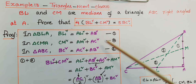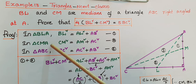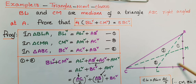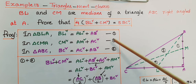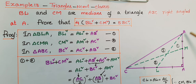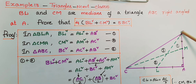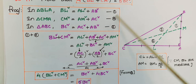In triangle BLA, since the angle is 90 degrees, BL² = AL² + AB² (first equation). In triangle CMA, since the angle is 90 degrees, CM² = AM² + AC² (second equation). In triangle ABC, since the angle is 90 degrees, BC² = AC² + AB² (third equation).